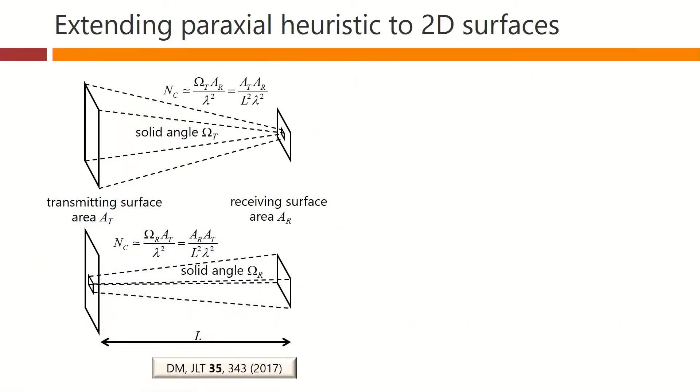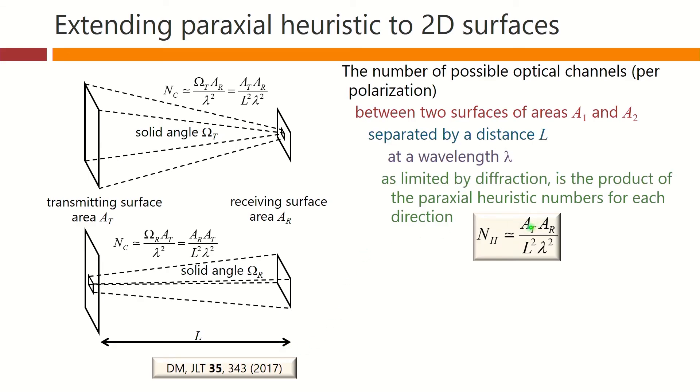It's quite straightforward to extend this discussion to two-dimensional surfaces, and I won't go through the detail here, but we can state the result. It's quite simple. It's the product of the two areas, divided by the square of the separation, and divided by the square of the wavelength.